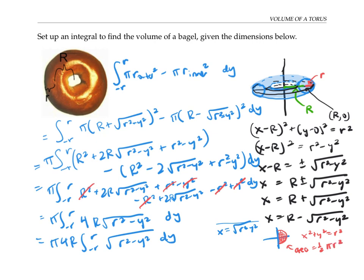So therefore, my integral is π times 4R times one-half π r². In other words, it's 2πR times πr².